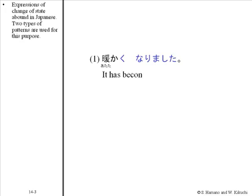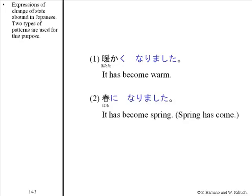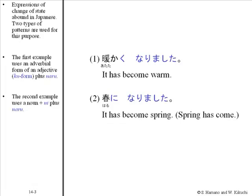Expressions of change of state abound in Japanese. Two types of patterns are used for this purpose. The first example uses an adverbial form of an adjective — the ku-form — plus naru. The second example uses a noun plus ni plus naru. Both observe the structure: result plus naru, meaning 'become.'